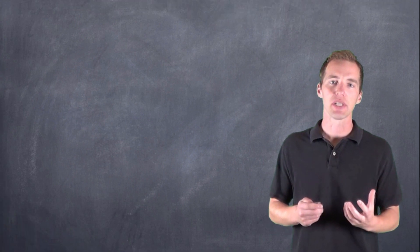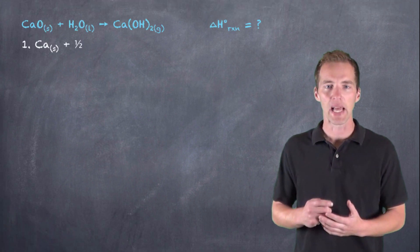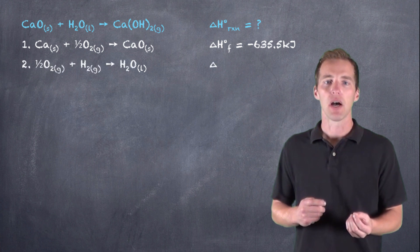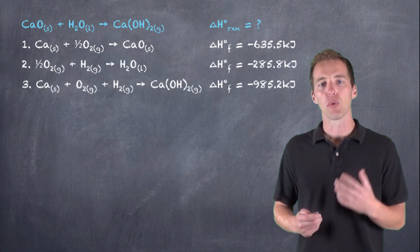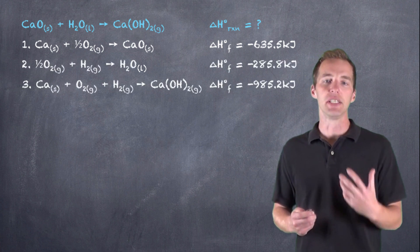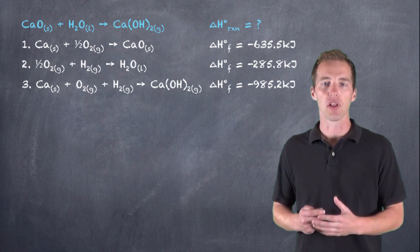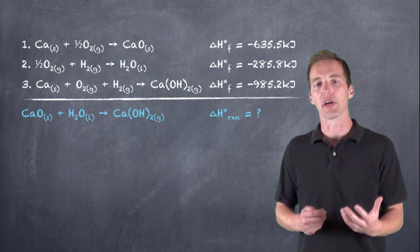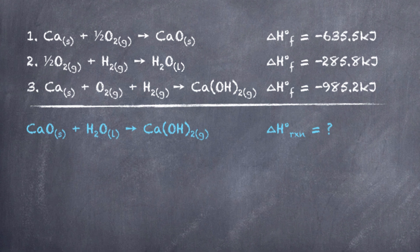Let's take a look back at using Hess's law for a reaction such as the formation of slaked lime from calcium oxide and water. So we're given a set of reactions, as we are in most Hess's law problems, and we have our target equation.